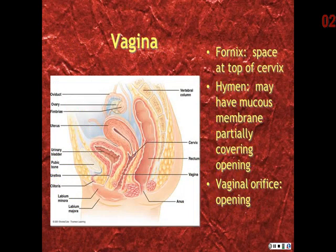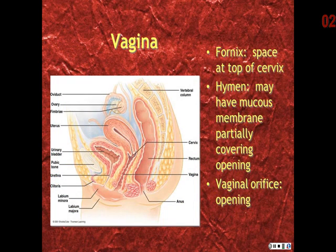The space at the top of the vagina is the cervix. There may be mucous membranes here known as the hymen, partially covering the vaginal opening, although this is generally lost as a result of physical activity before a female reaches puberty.